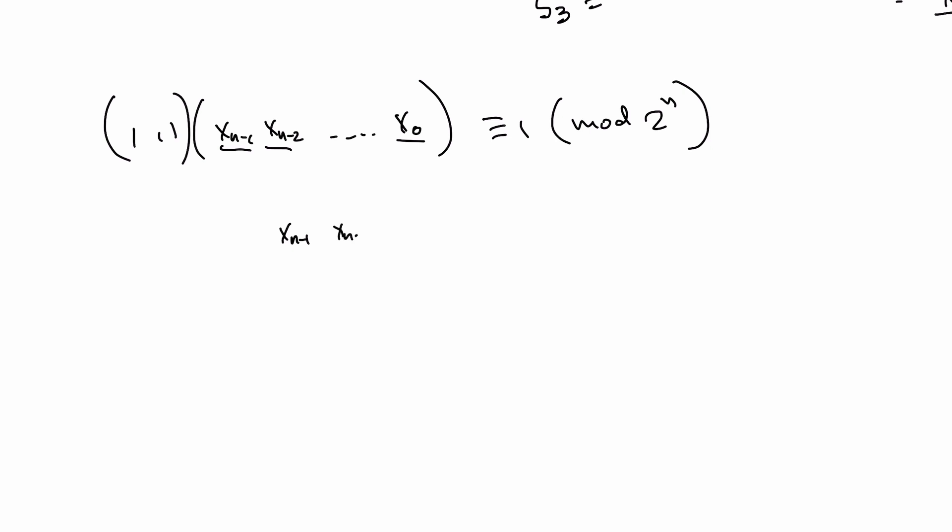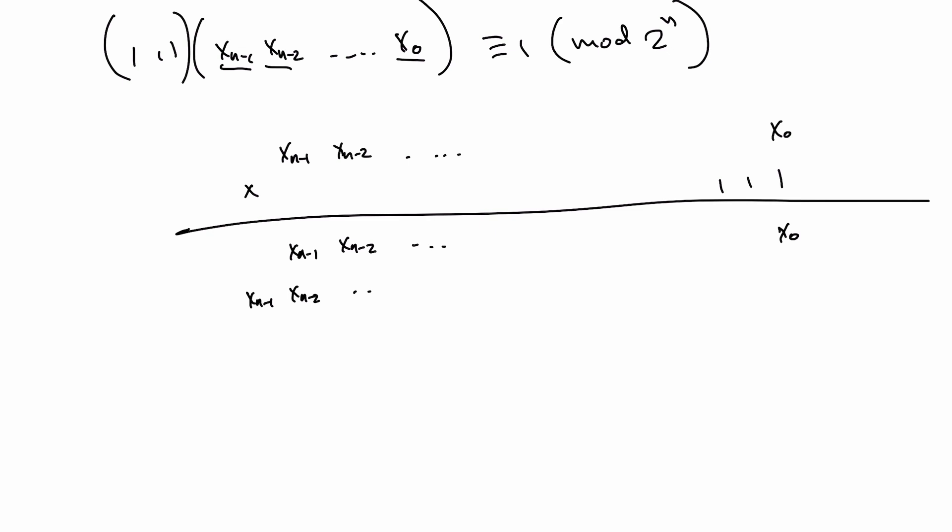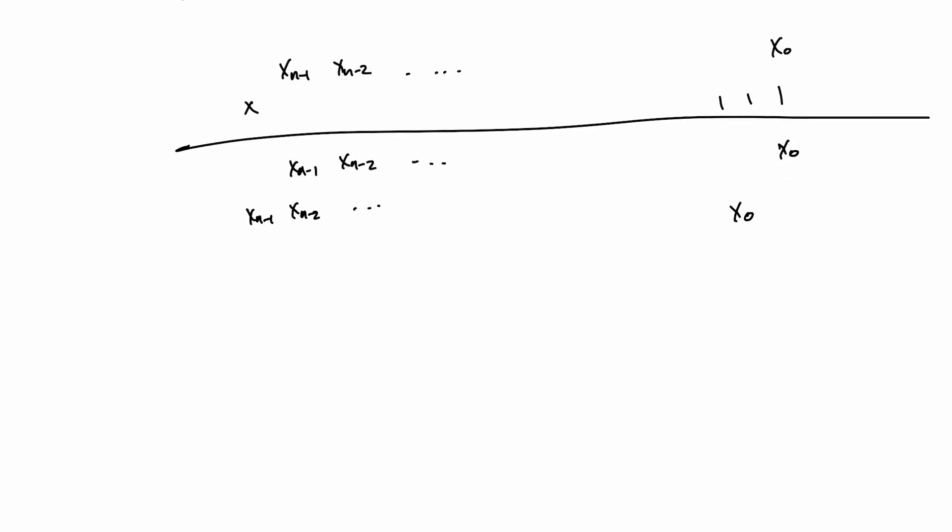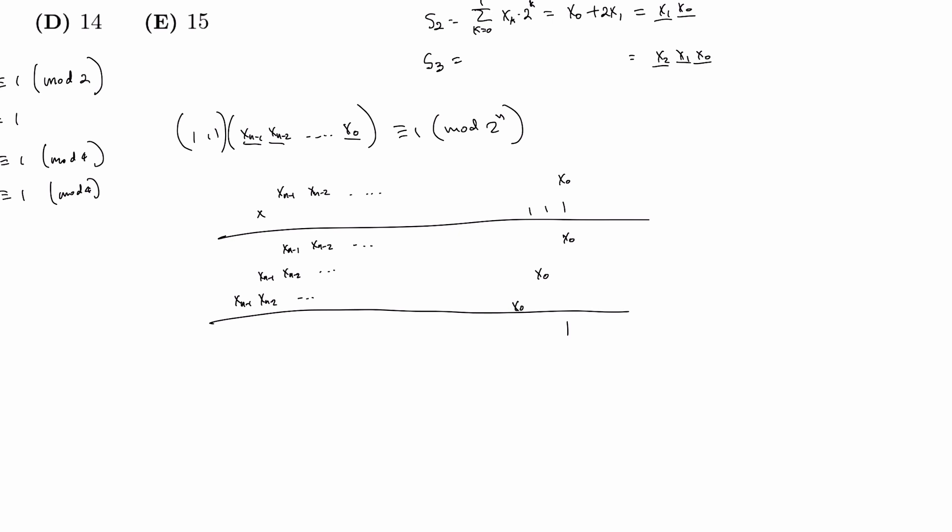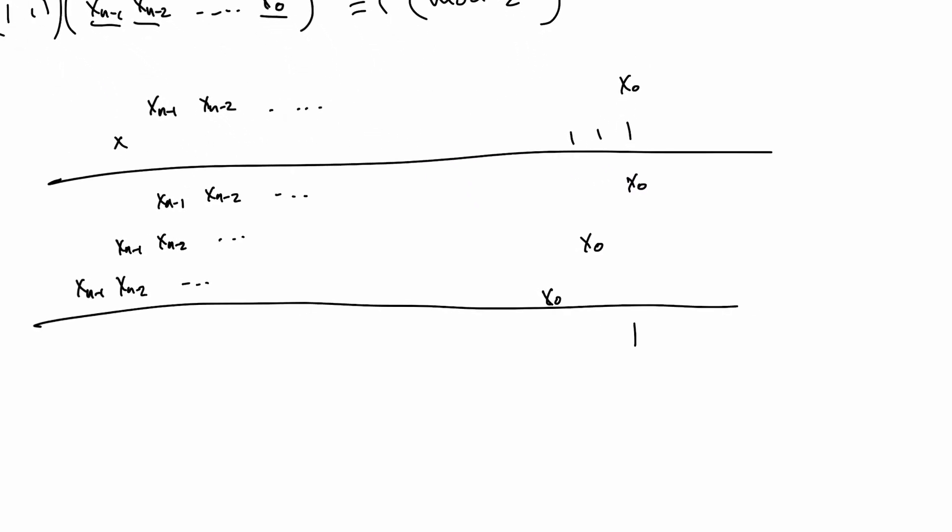xn-1, xn-2, all the way to x0, times 111. So you would get the same thing because you're just multiplying by 1, but shifted once for the second one and shifted twice for the third one. This is going to be 1, and until 2 to the nth, mod 2 to the nth. So until this bit, everything here is going to be 0. 0, 0, 0.